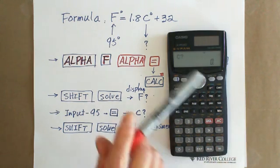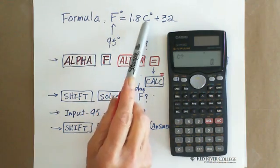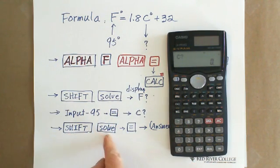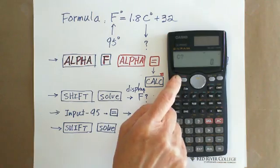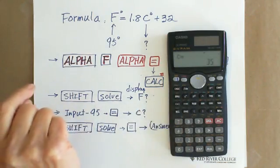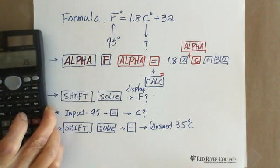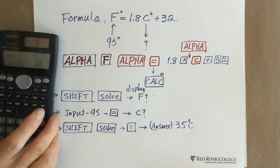Then they ask you what is C. C we're looking for, the Celsius degree we're looking for. That's why you need to go to shift solve, shift solve. They give you 35 degrees. Yeah, they give you 35 degrees. Now, this is the answer, 35 degrees.